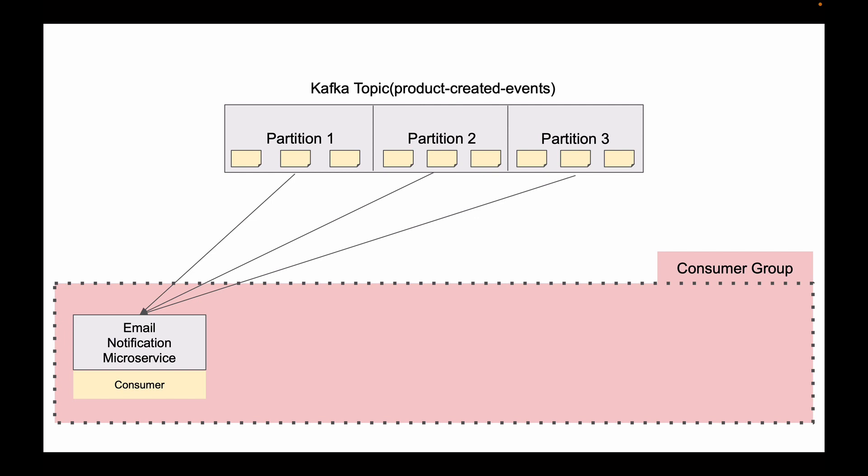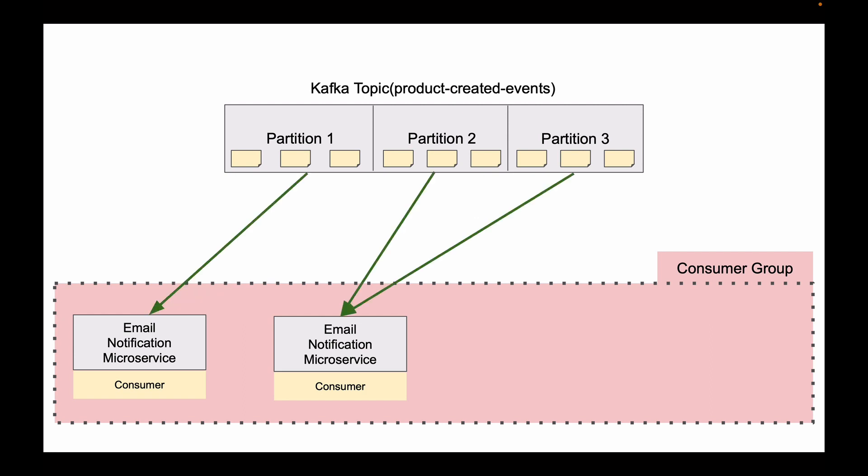Now let's assume that there is a large load on our application, and one instance of Email Notification microservice is not enough. We want to scale up our application and start one more instance. What will happen is Kafka will notice that we have two consumer applications running, and it will reassign partitions among these two consumers. Now one instance reads messages from one partition, and another instance reads data from two partitions.